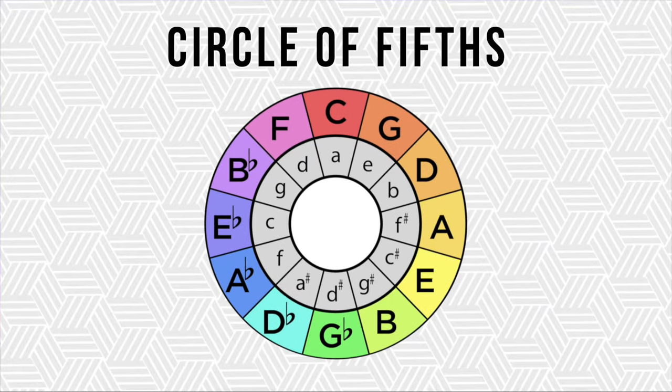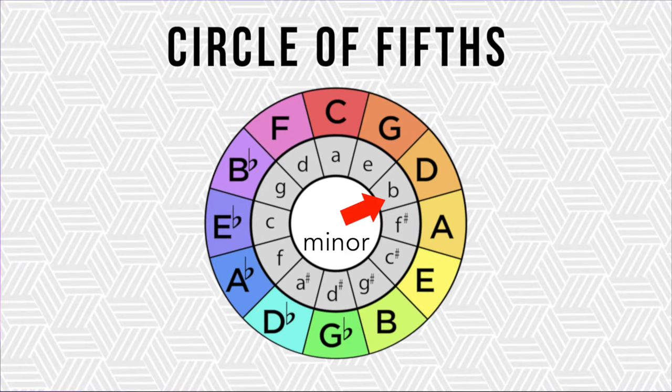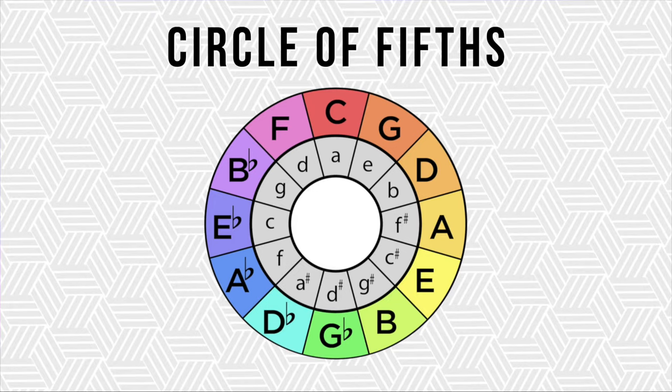To talk about transitions between two songs that are in different keys, we're going to utilize a resource called the circle of fifths. The circle of fifths in a clockwise direction has all 12 major and relative minor keys in a circle of perfect fifths all the way around. You go from C to G, from G to D, from D to A, and so on, all the way around until you reach back to C. The circle of fifths gives us really simple visual relationships that help us determine the simplest and most musical way to transition from one key to another.